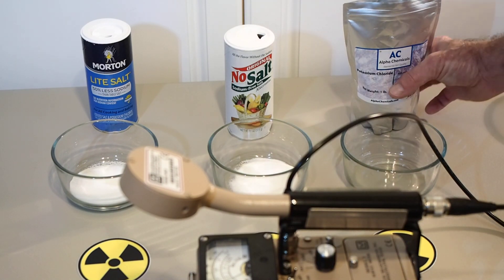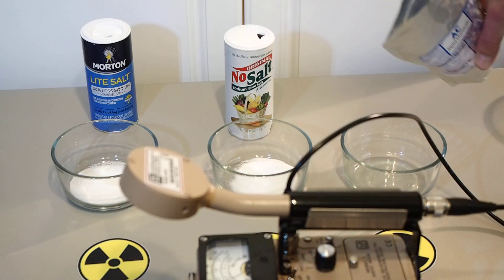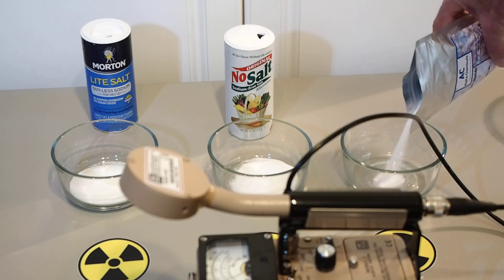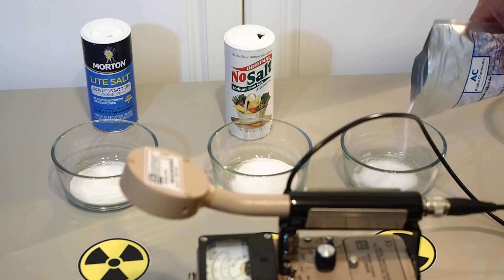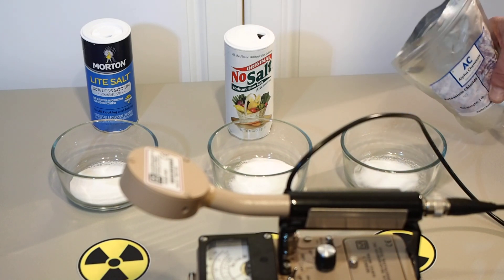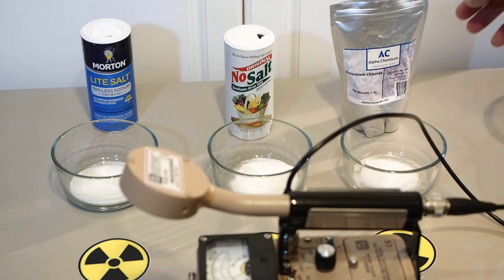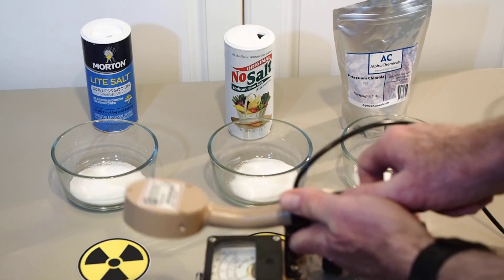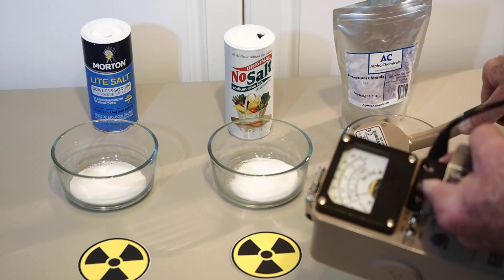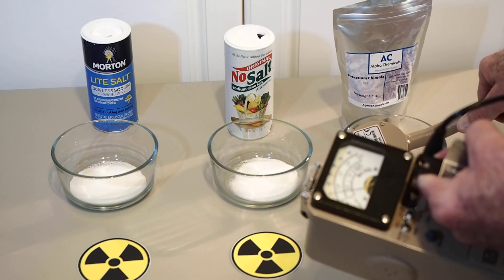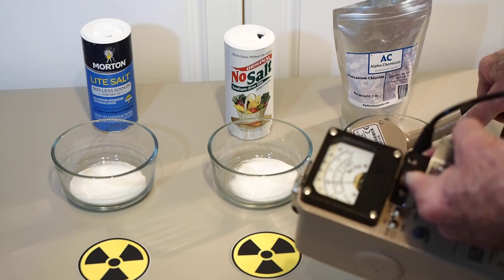So next we're going to try about an equal amount of the potassium chloride. We'll pour that into the bowl. I'm trying to be fair and putting about the same amount of material. So we'll take our Ludlum here, 44.9, about the same distance from the exposed sodium chloride, and see what reading we get.